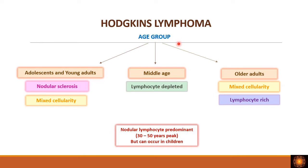Regarding age distribution: nodular sclerosis and mixed cellularity are seen in adolescents and young adults. Lymphocyte depleted occurs in middle age. In older adults, mixed cellularity and lymphocyte rich are more common. Mixed cellularity spans both young and elderly groups. Nodular lymphocyte predominant type peaks between 30 to 50 years but can also occur in children.